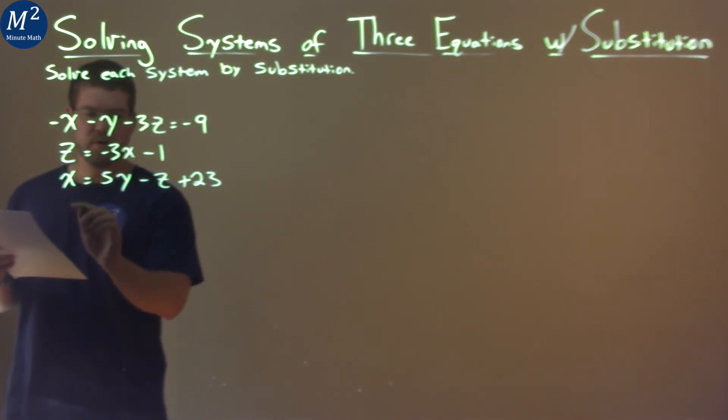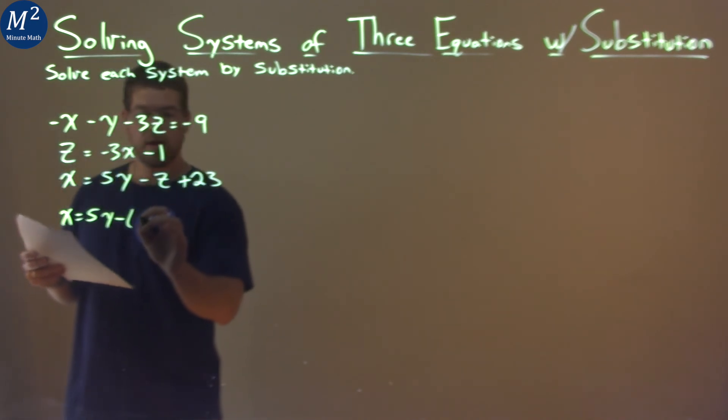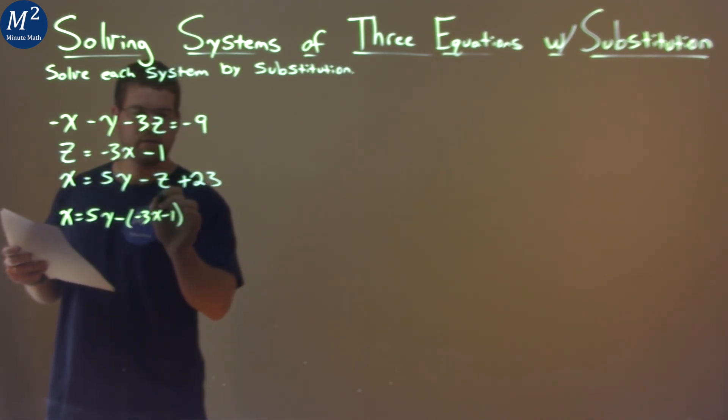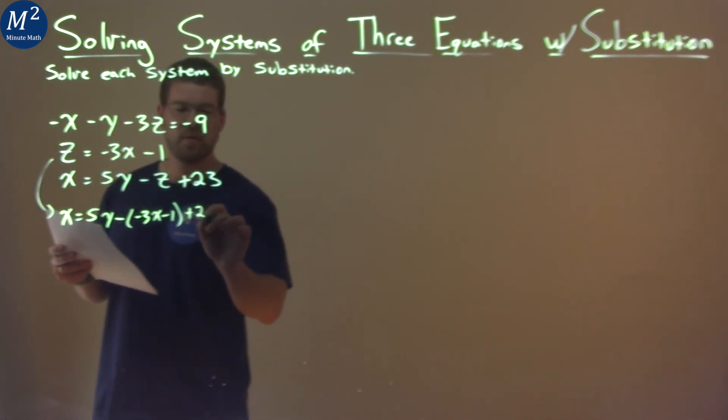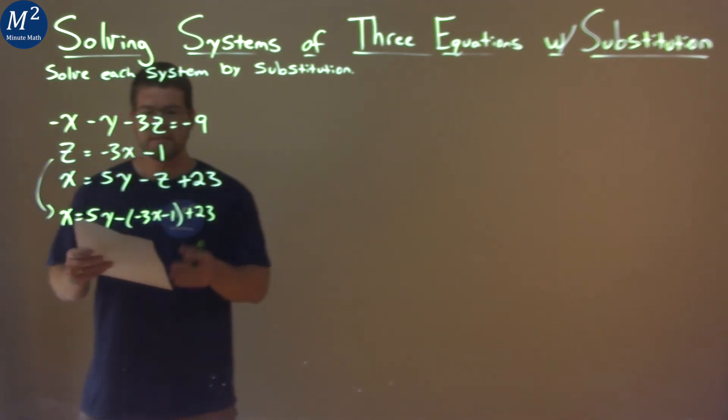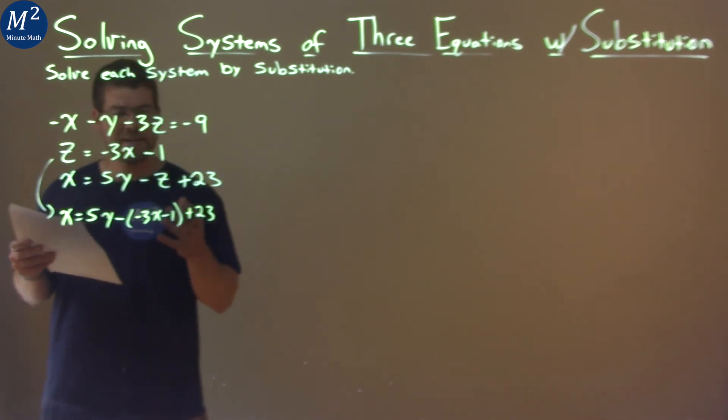I'm going to rewrite this third equation: x equals 5y minus, and instead of z I'm putting negative 3x minus 1 in for that z. You're going to see that here. And then we plus 23. Now let's simplify this as much as possible. We want to get our like terms together, x's to the left, numbers to the right.